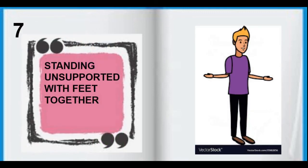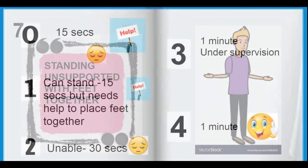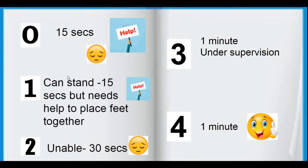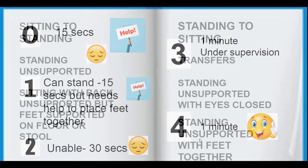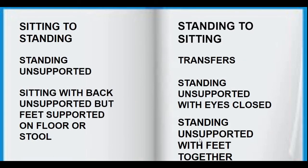The seventh task is standing unsupported with feet together. If the patient cannot stand with feet together for 15 seconds without help, we give a score of 0. If they can stand with feet together without support for 1 minute safely, we give them the maximum score of 4. These are the first seven tasks.